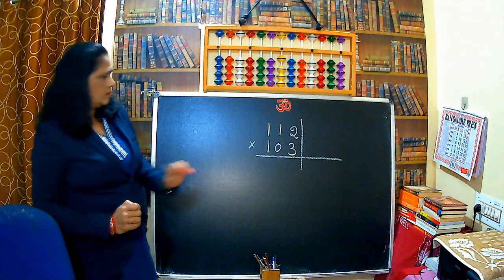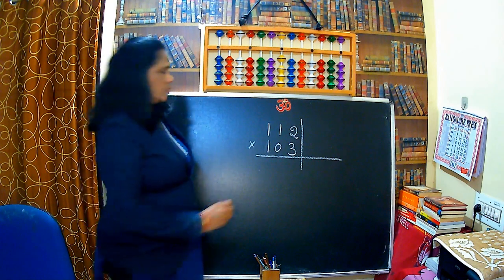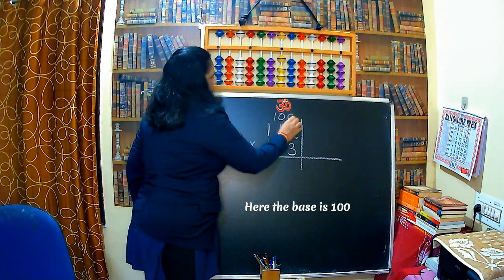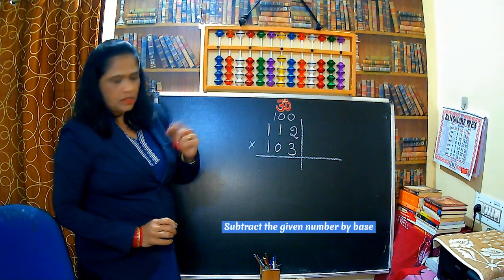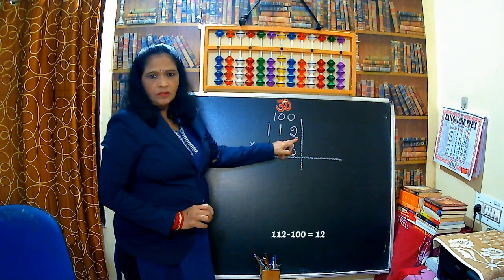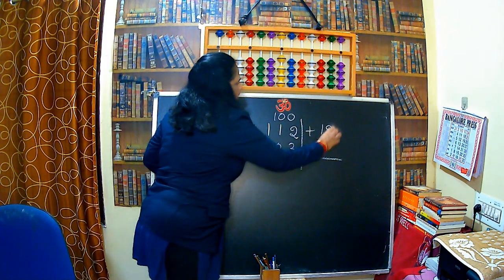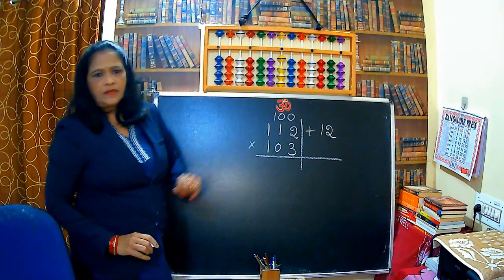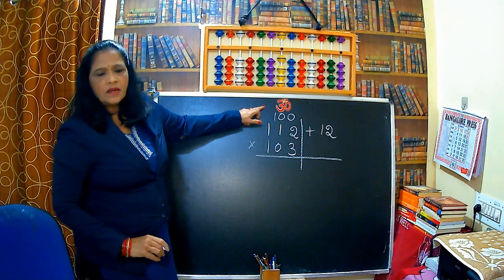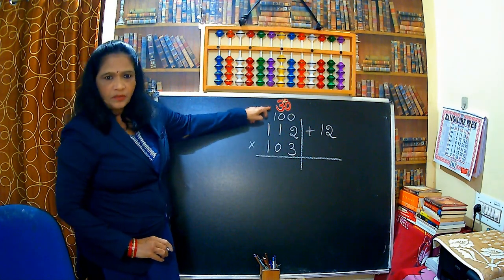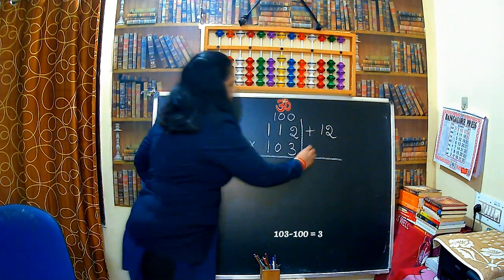First, what we have to do? Find what is the base. This is the 3-digit number, so this is very near to 100. The base is 100, isn't it? Now subtract the given number by base. So 112 minus base 100, so that is 12. Write it in the right hand side. Then 103 minus 100, that is the base. Subtract with the base, 103 minus 100, that is 3.